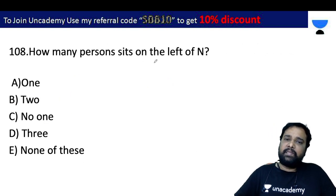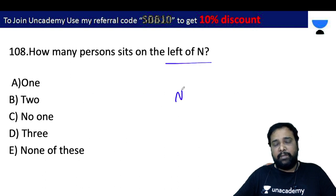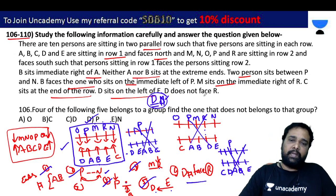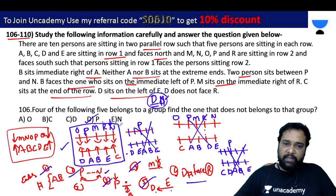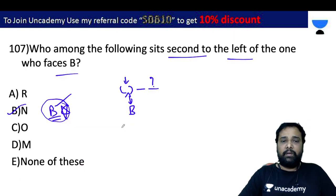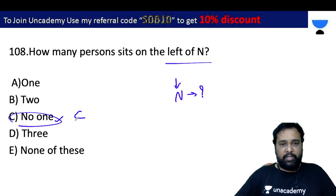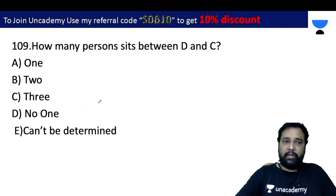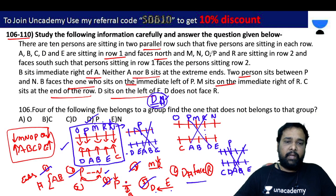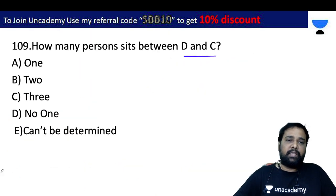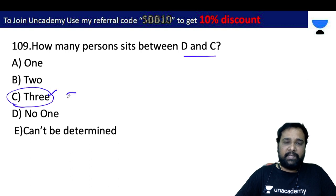How many persons are to the left side of N? N's opposite person is identified, and we count positions to N's left. How many persons sit between D and C? Between D and C there are 3 persons: A, B, and E. The answer is C.